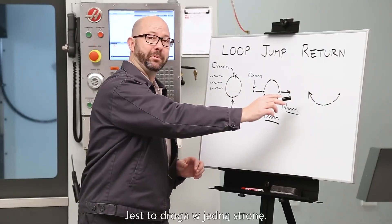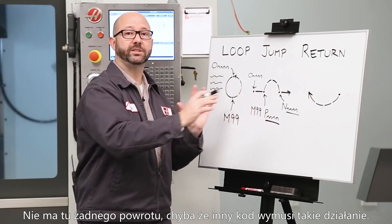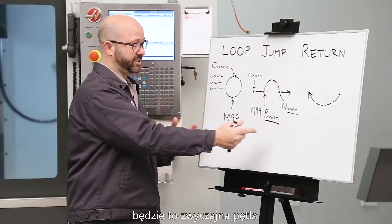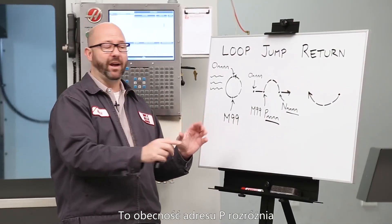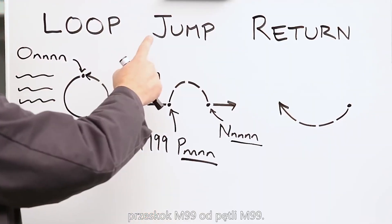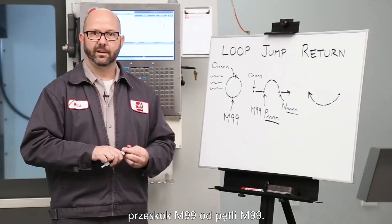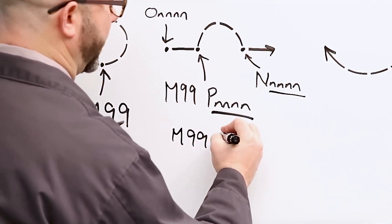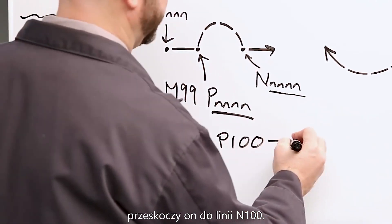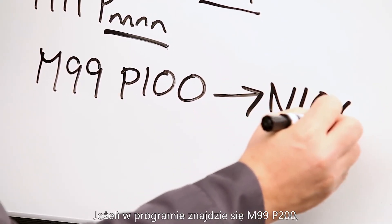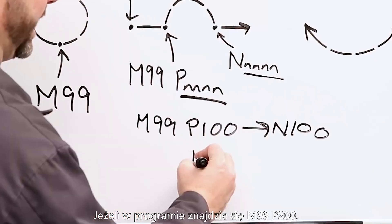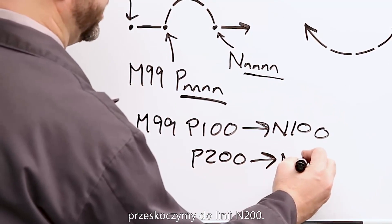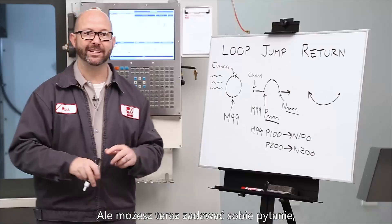This is a one-way jump. It's not coming back unless some other code tells it to. Without that P number on the same line as the M99, it's just a loop. It's that P value that distinguishes an M99 jump from an M99 loop. If I have an M99 P100 in my program, it's going to jump to line N200.